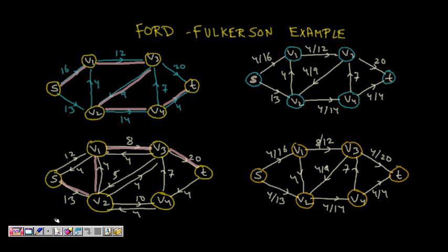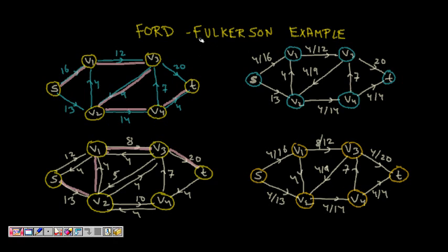In this lecture, we will see one example of the Ford-Fulkerson algorithm to find the maximum flow in a flow network. We will take an example and run the Ford-Fulkerson algorithm on a directed graph where the capacities of the edges are given.